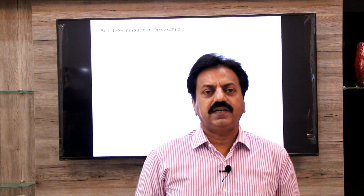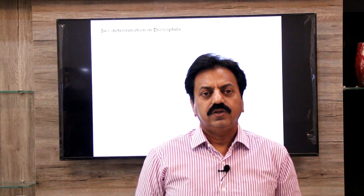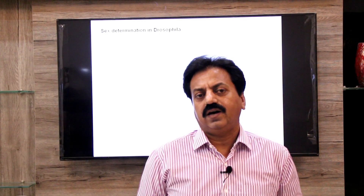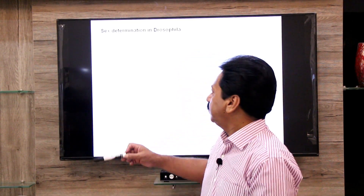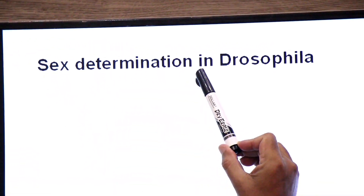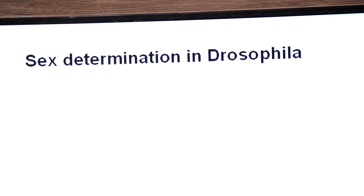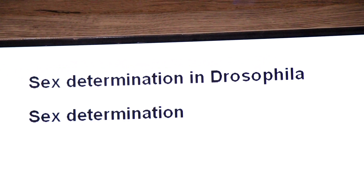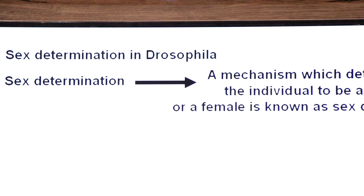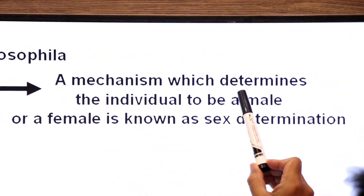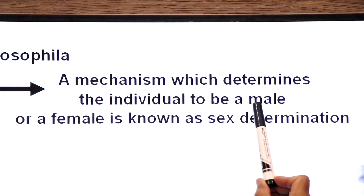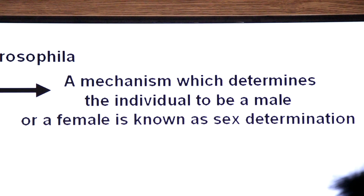Hello friends, welcome back to our inter-biology classes. Today we are going to talk about Sex Determination in Drosophila, commonly known as fruit fly. A mechanism which determines the individual to be a male or female is known as Sex Determination.